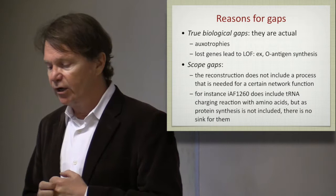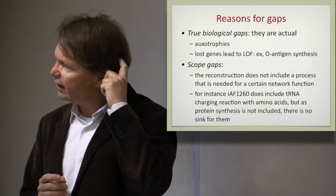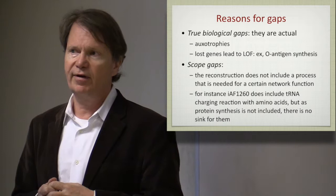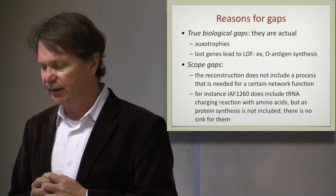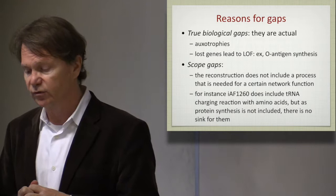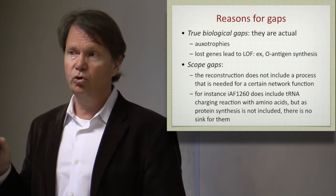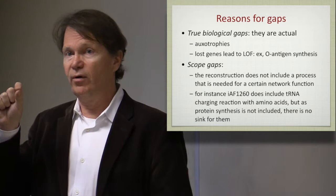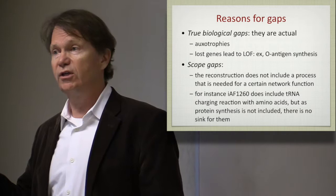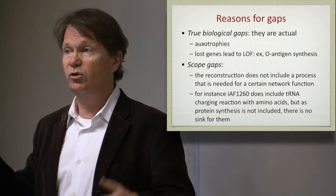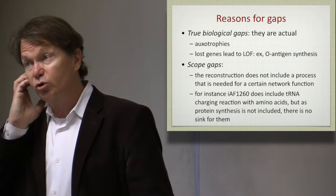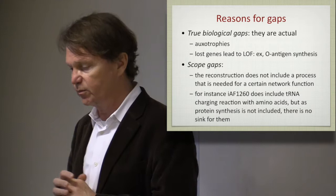So then there are what are called scope gaps. You try to calculate something, but the scope of the reconstruction doesn't include that, and you think you have a failure mode, but you really don't. And one of the examples spoken about in the literature are gaps associated with the E. coli reconstruction, iAF1260, that includes the charging reactions of amino acids to tRNAs. So that reconstruction ends by an amino acid being made and it's put onto a tRNA. But since there's nothing on the other side that uses that tRNA for protein synthesis, that will look like a dead end. But it really isn't a dead end because if you couple it to a protein synthesis, it functions. So those kind of gaps are called scope gaps, and they are gaps that result from the scope of the reconstruction that has been put together.